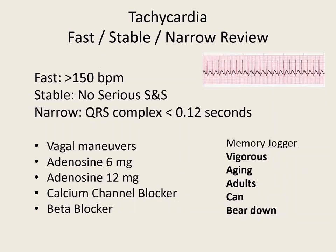Here's our review for fast, stable, and narrow. Over 150 beats a minute, no serious signs and symptoms, QRS complex less than 0.12 or three little boxes. Memory jogger: 'vigorous aging adults can bear down.' Try a vagal maneuver — Valsalva, blow on a syringe, carotid massage, bear down, or ice pack to the face for pediatric patients. If that doesn't work: 6 mg rapid IV push with 20 cc flush, then 12 mg rapid IV push with 20 cc flush. Then consider a calcium channel blocker or beta blocker — Cardizem or Propranolol.